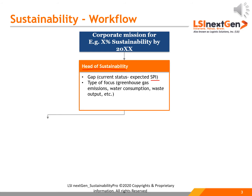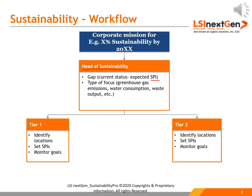The goals are further cascaded by the Head of Sustainability to each stakeholder at Tier 1 and Tier 2 levels. To attain the sustainability goal, the Head of Sustainability looks into various types of Sustainability Performance Indicators such as greenhouse gas emissions, water consumption, waste output, and more.